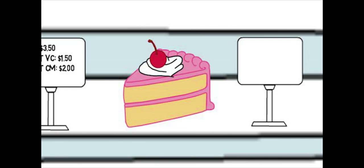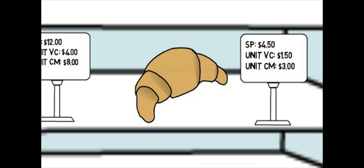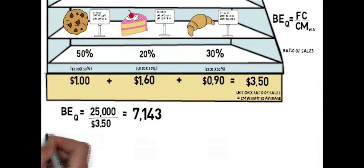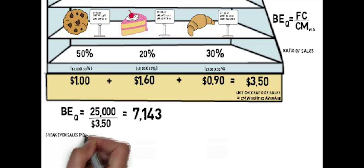Bob realizes that since he is selling multiple products, he needs to make an adjustment to the break-even formula. When a business sells more than one product, the selling price and the variable costs of each product needs to be calculated as a weighted average. This is done by using the percentage that each product makes up of total sales.